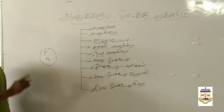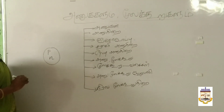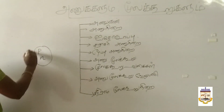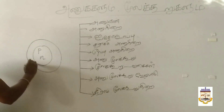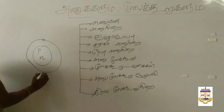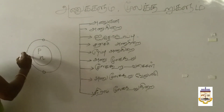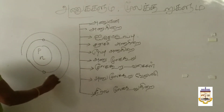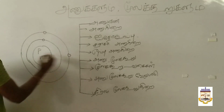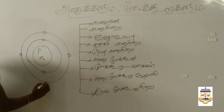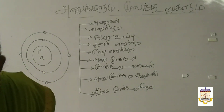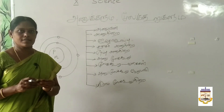Proton is a name. Neutron is a name. This is a neutron. This proton is a name. The electron is a name. This electron is a name. We will take carbon. Carbon is a name. This is carbon.